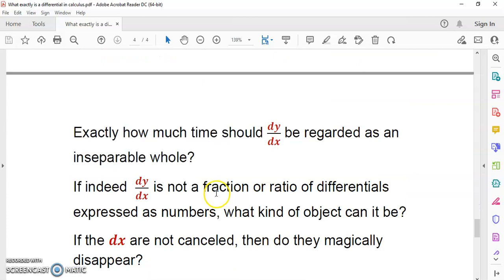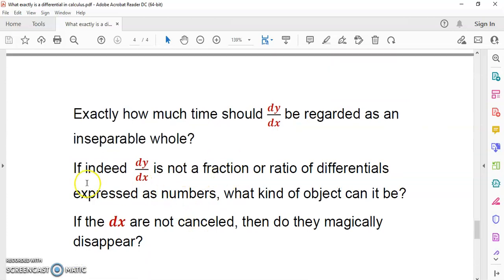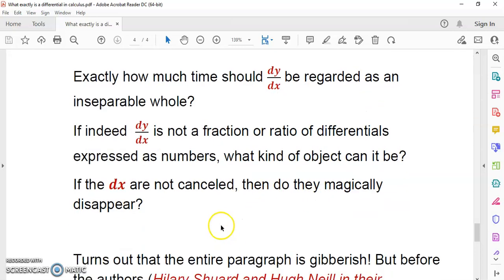This is how mainstream academics see these things. If indeed dy dx is not a fraction or a ratio of differential expressed as numbers, what the fuck can it be? What kind of object can it be? It makes me angry to read these things. These are the kind of things, Professor Jack Heisinger, that make my eyes bleed. Not your eyes bleed, you fucking moron. You coward.